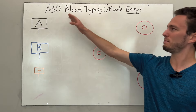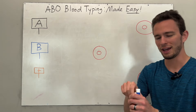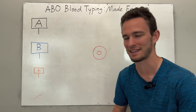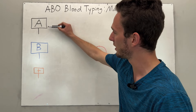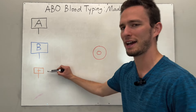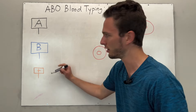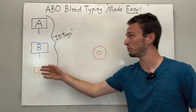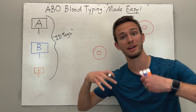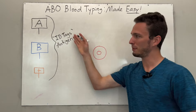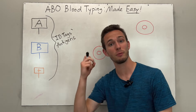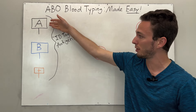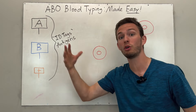ABO blood typing — the letters refer to little flags or identity tags. We have an identity tag for A, an identity tag for B, and an identity tag for a positive. Your red blood cells can have any one or multiple of these ID tags, otherwise known as antigens. Which ones you have is determined by your parents' genetics — they pass on these traits to you, determining which antigens you will or will not have.